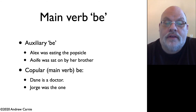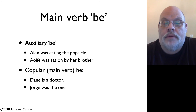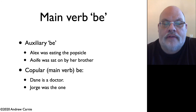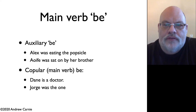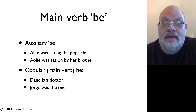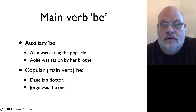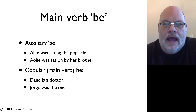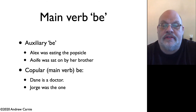We also have the auxiliary be that shows up in both passives and progressives, as in the first two sentences on this slide. What's different about copular be is that it can appear before negation and it can undergo subject-auxiliary inversion — you can say 'Is Dane a doctor?' and 'Dane is not a doctor.' So the same tests used for have and do don't work here, but there do seem to be two distinct meanings.